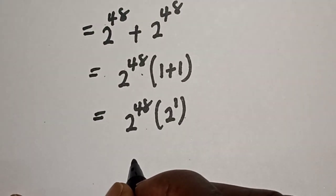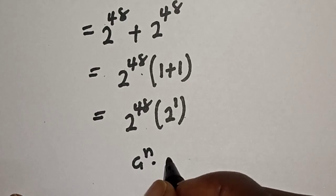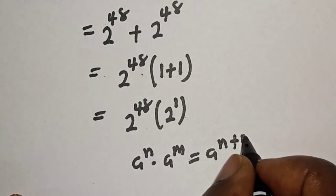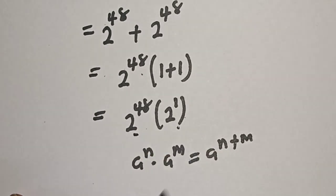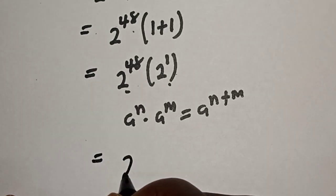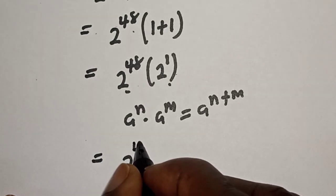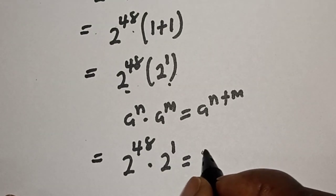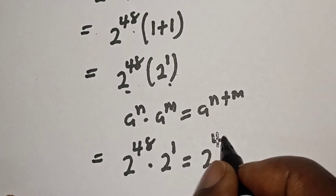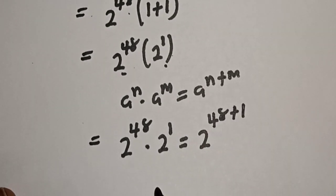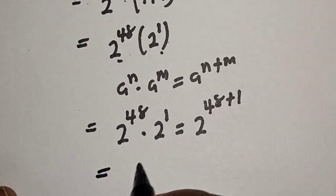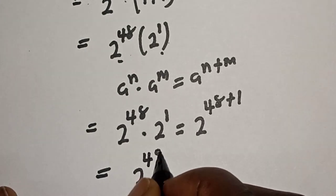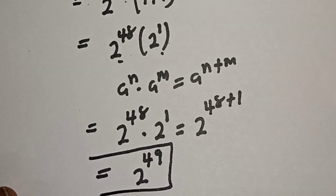So take note of this rule: a raised to power n multiplied by a raised to power m is equal to a raised to power n plus m, because of the same base. So we have 2 raised to power 48 multiplied by 2 raised to power 1, is equal to 2 raised to power 48 plus 1, and this is equal to 2 raised to power 49. And this is the final answer.